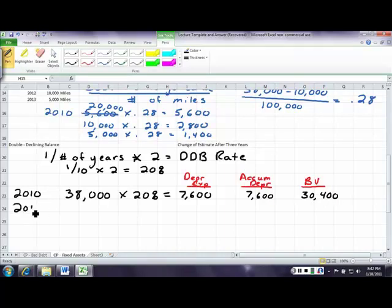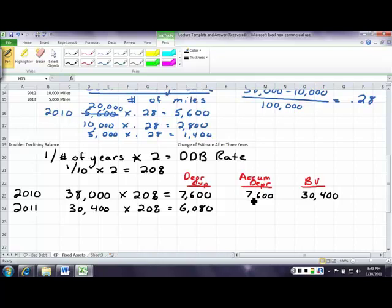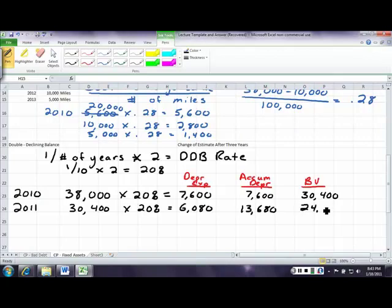For 2011, I'm going to take $30,400 times 20%, and this is going to give me $6,080. Notice I have done nothing with salvage value. $7,600 plus $6,080 equals $13,680 for my accumulated depreciation. If I take my beginning book value of $38,000 minus $13,680, I get $24,320.